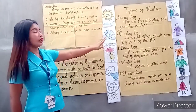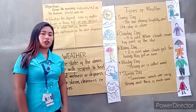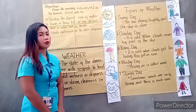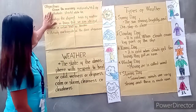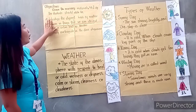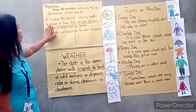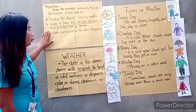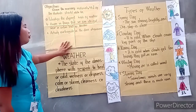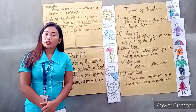Before we start, let's begin with the objectives. So anyone can read for me the objectives of our topic? Okay, thank you. So the objective is: given the necessary materials, 75 percent of the students should be able to identify the different kinds of weather, be aware of the things that we can do and wear in certain kinds of weather, and actively participate in the class discussion. So anyone can tell me what is the weather for today?